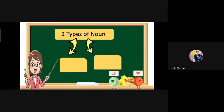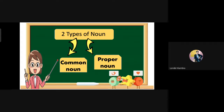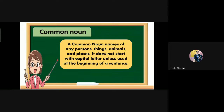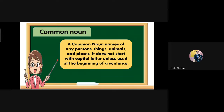The common noun and the proper noun. A common noun names any person, things, animals, and places. It does not start with a capital letter unless used at the beginning of a sentence.